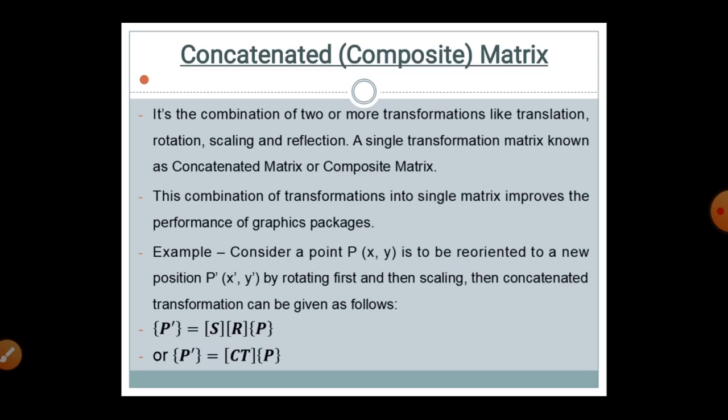Now let's see an example of how we can put this into matrix or mathematical formation. Consider a point P of (x, y) to be reoriented to a new position P' of (x2, y2) by rotating first and then scaling. Here two operations are performed — rotation and scaling. The composite transformation can be given as: P' equals the matrix S multiplied by matrix R.